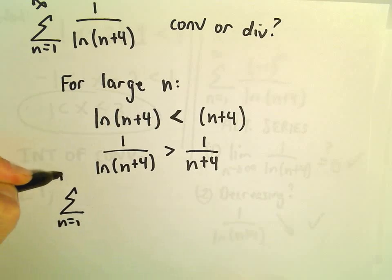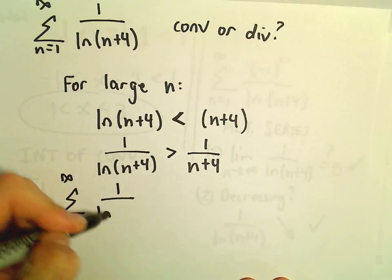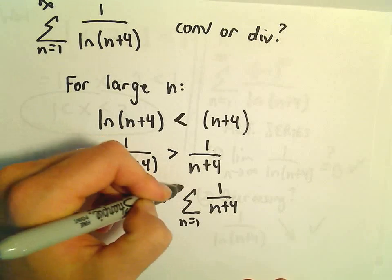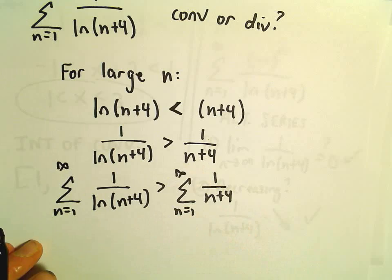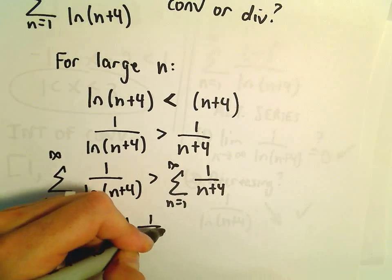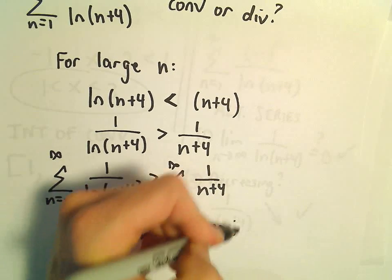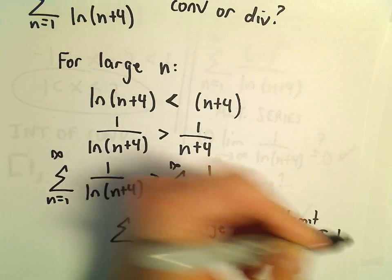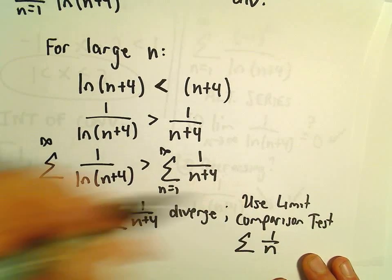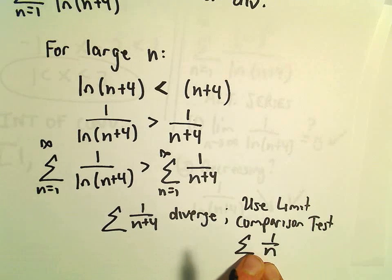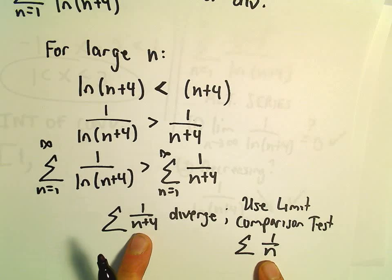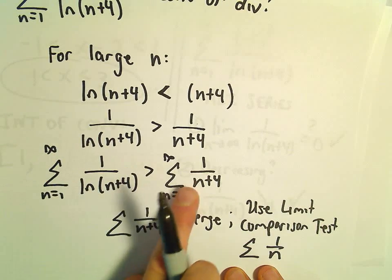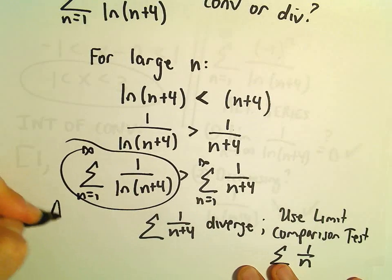And that tells us, for these positive n values, that the series from 1 to infinity of 1 over the natural logarithm of n plus 4 is greater than the series 1 over n plus 4. The series 1 over n plus 4 is going to diverge. You could use the limit comparison test with the series 1 over n — this is a divergent p-series. The limit will be positive 1, which means this series also diverges. Since this series is larger than a divergent series, that tells us that our series in question also diverges.